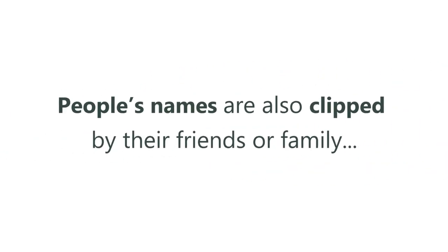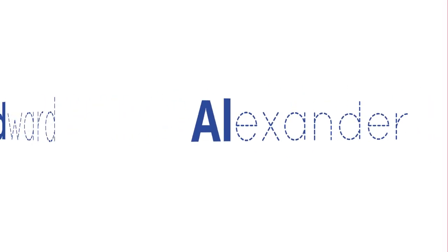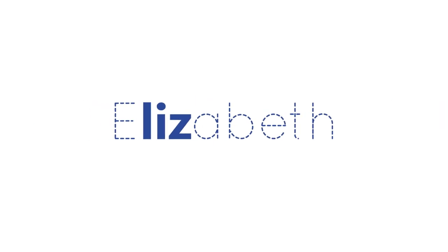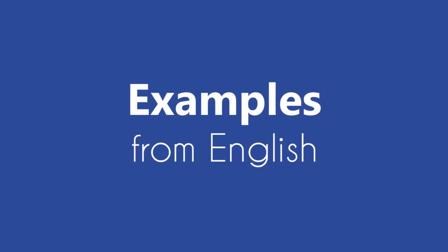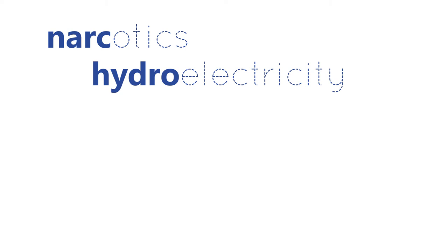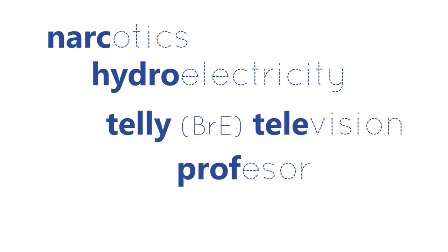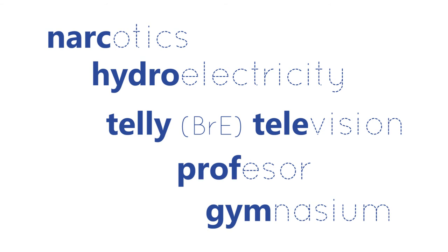One place where clipping is common is in names. Alexander becomes 'Al,' Edward becomes 'Ed,' and Elizabeth becomes 'Liz.' In the case of Al and Ed, it's clipped from the beginning, but with Elizabeth, it's the second syllable that gives us 'Liz.' More examples: 'narc' for narcotics, 'hydro' as in 'I got my hydro bill,' 'telly' in British English for television, 'prof' for professor, and 'gym' for gymnasium.